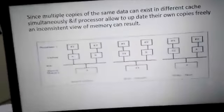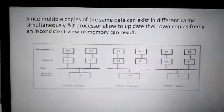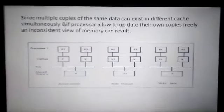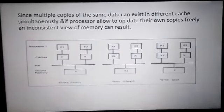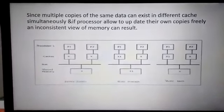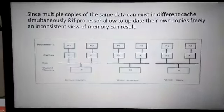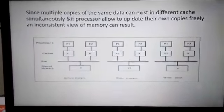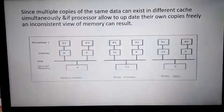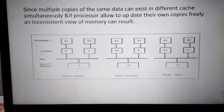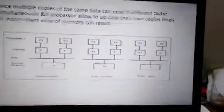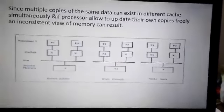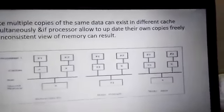Since multiple copies of the same data can exist in different caches simultaneously, and if processors are allowed to update their own copies freely, an inconsistent view of memory can result.